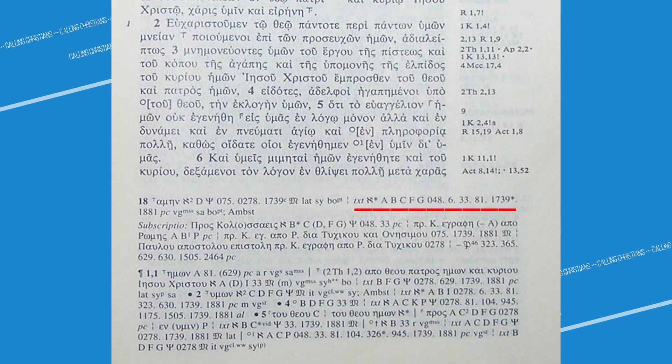It starts with Codex Aleph, known as Codex Sinaiticus. Then the letter A which stands for Codex Alexandrinus. Then B which stands for Codex Vaticanus, C which stands for Codex Ephraemi, F which stands for Codex Augiensis, G which stands for Codex Boernerianus, and so on.